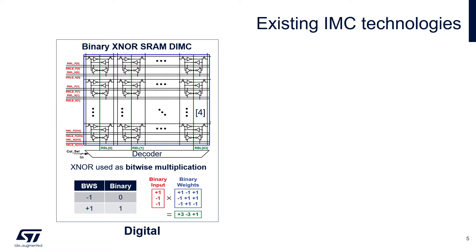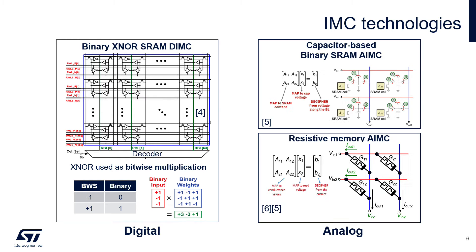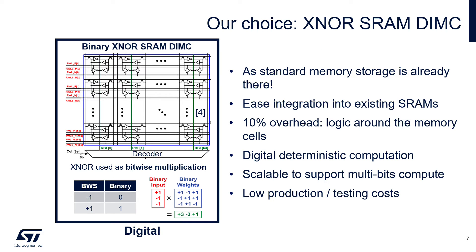For in-memory compute, there are different solutions. One is digital — using a digital memory, it is quite simple to add logic, especially binary logic. Other choices are analog, or capacitor-based IMC. Our choice was the digital one. Why? First, the extra logic cost is only about 10% on top of the SRAM. Second, we need SRAM on chip anyway, so why not support computing there? Third, digital IMC is easy to integrate, easy to manufacture, already mature in any chip, deterministic in behavior, and scales easily in production.